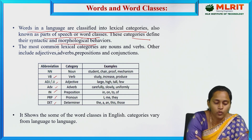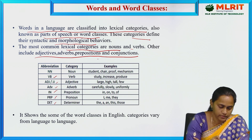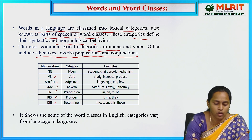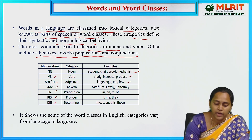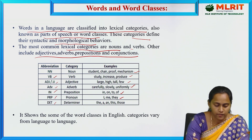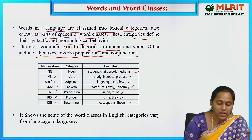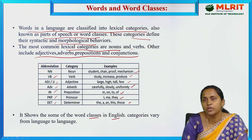These categories define the syntactic and morphological behavior of words. The most common lexical categories are nouns and verbs; others include adjectives, adverbs, and prepositions. For example: nouns — student, chair, mechanism; verbs — study, increase, produce; adjectives — large, tall, few; adverbs — carefully, slowly; prepositions — in, on, to, of; pronouns — I, me, they; determiners — the, a, these, those.